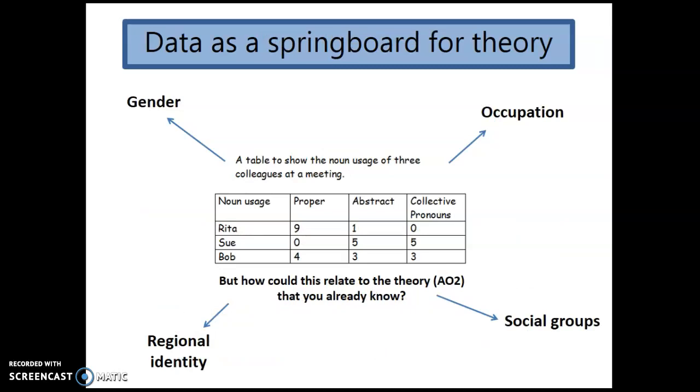Now, we also want you to use your data as a springboard for theory. When you look at this, what do you think of in terms of gender, occupation, region, social groups, ethnicity, age? Any of those things come to the fore when you're looking at this particular table. I would like you now to spend some time jotting down which theorists you might explore for this. Pause the video. Write down what you think about theorists in relation to this table. When you're ready, press play.